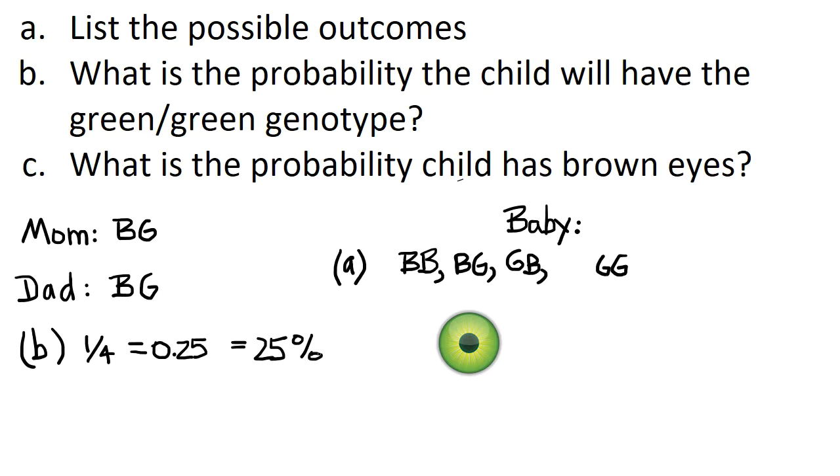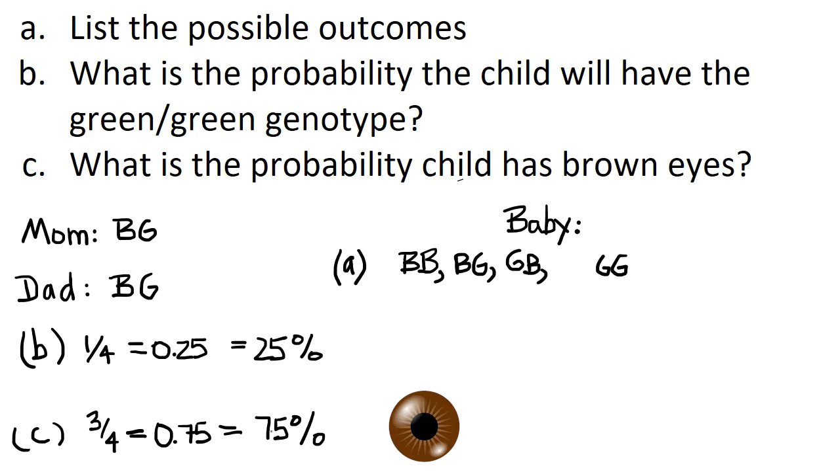For part C, what's the probability the child has brown eyes? There's three chances out of four, or 0.75, or 75%. So it's much more likely the child will have brown eyes. Mom has brown eyes. Dad has brown eyes. But they both have the brown-green genotype.